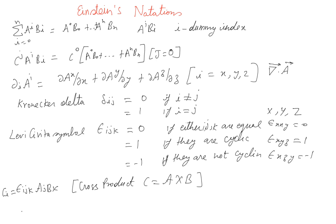Similarly, you can write epsilon_ijk times partial_j A_k, and if you look closely, this is nothing but the curl of A. A few more examples: partial_i partial_j gives the Laplacian, written as nabla-squared A.